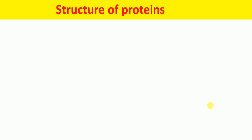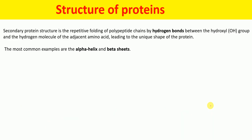Now let's talk about the secondary structure of the protein. Secondary structure of the protein is the repetitive folding of polypeptide chains by hydrogen bonds between the hydroxyl group and the hydrogen molecule of the adjacent amino acid, leading to the unique shape of the protein. The most common secondary structures are alpha helix and beta sheet.